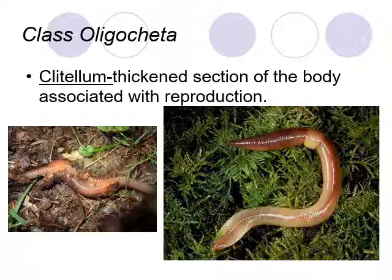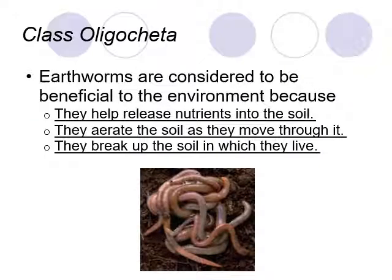Earthworms are really beneficial to the environment. They release and move nutrients in the soil and produce waste that enriches it. They aerate the soil as they move through it, creating holes so that water can move through. They also break up the soil, making it softer so that roots of plants can penetrate it. Plants and things that depend on water moving through the soil have a lot to thank worms for, because worms make the soil soft and make water and nutrients easily available.